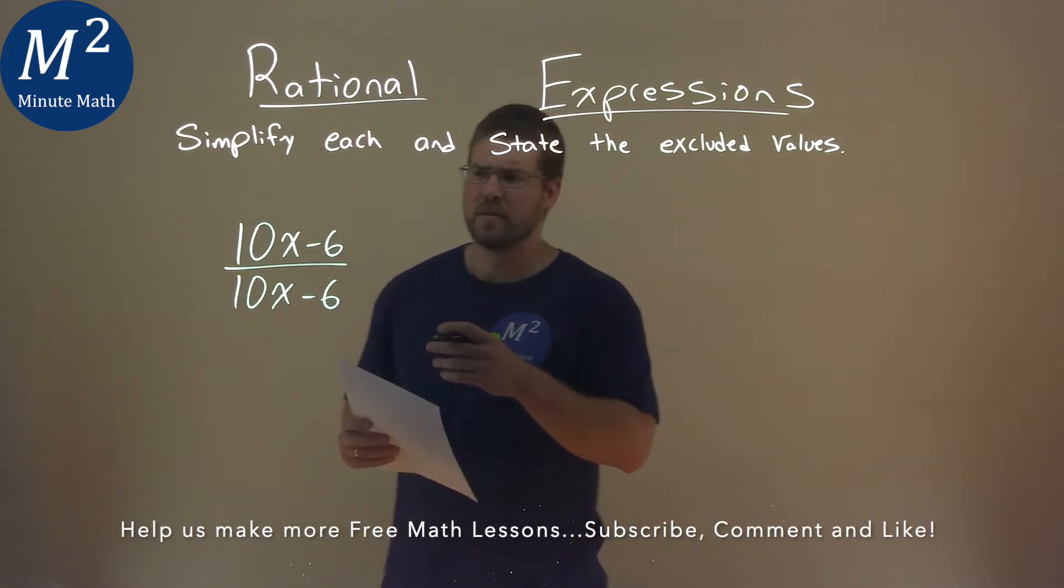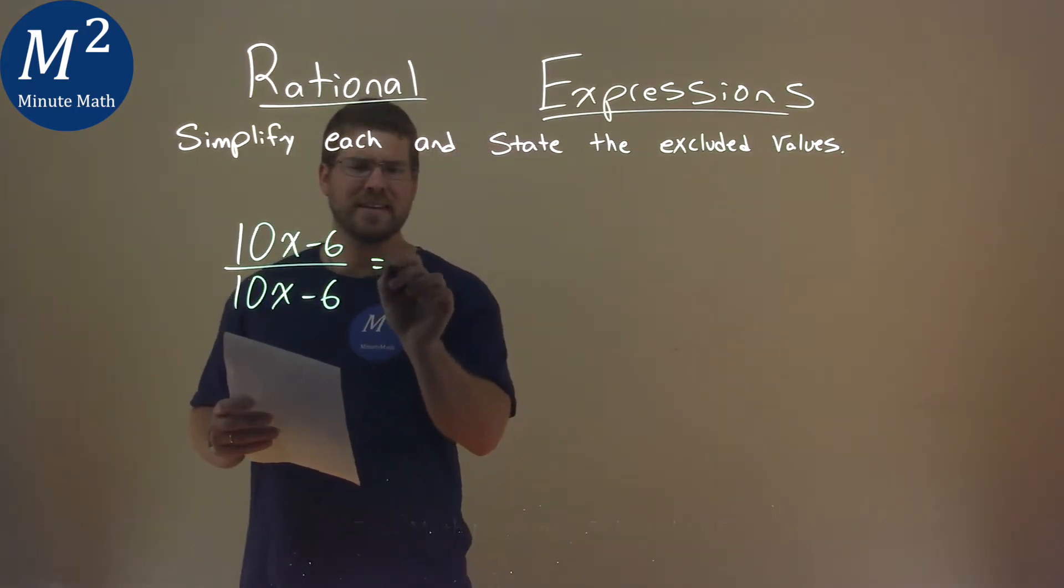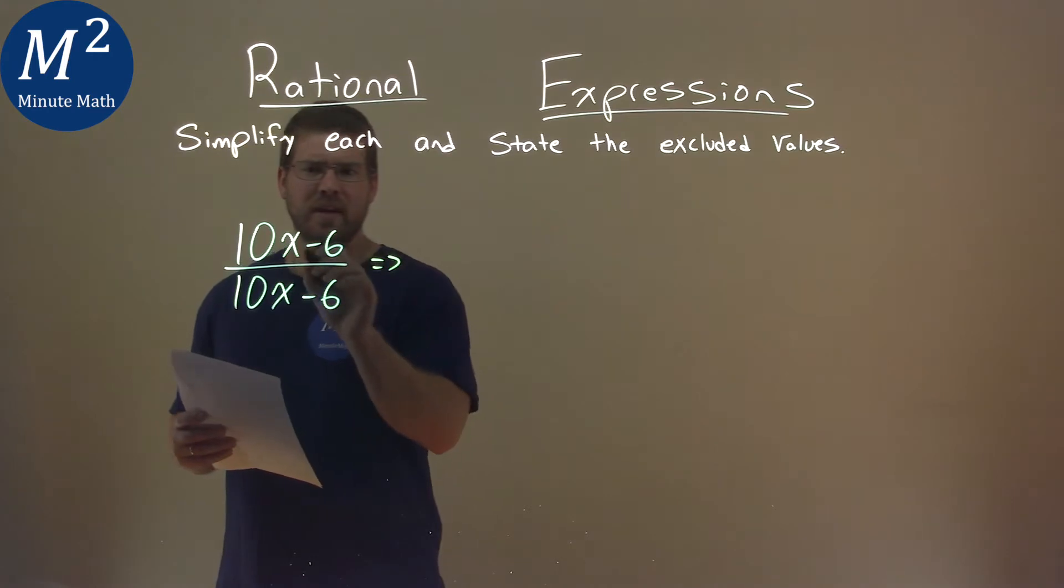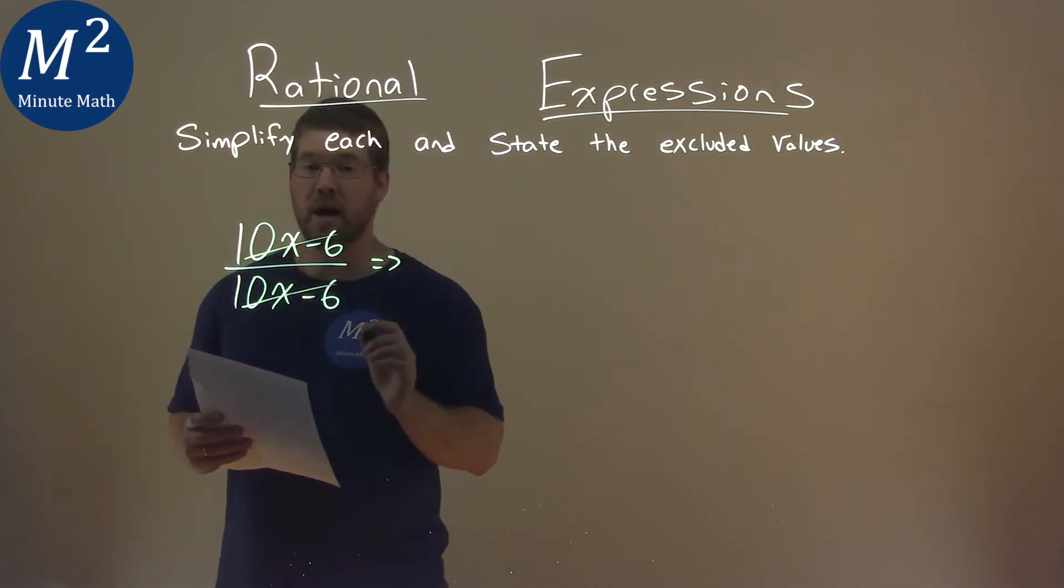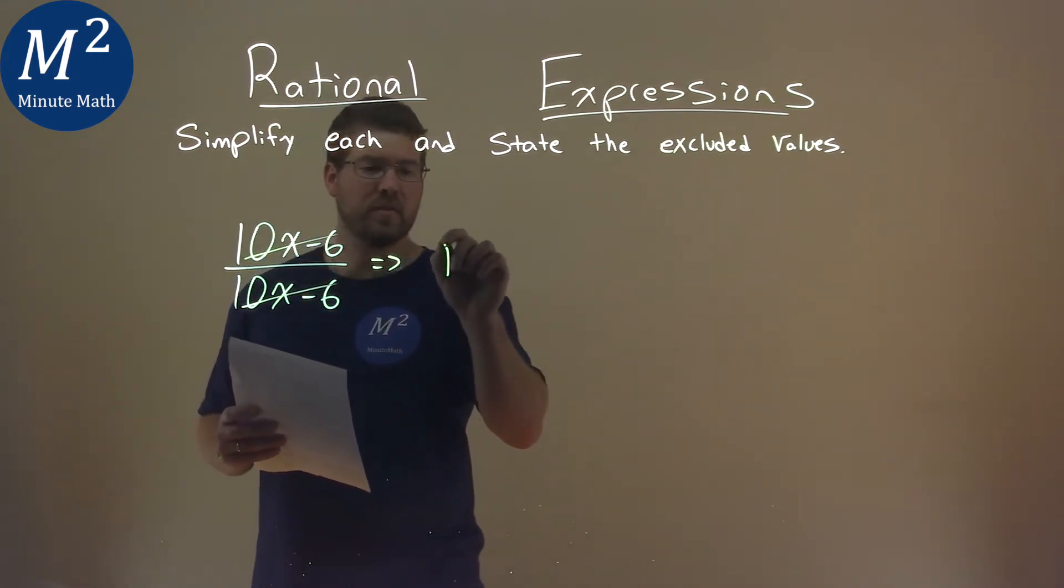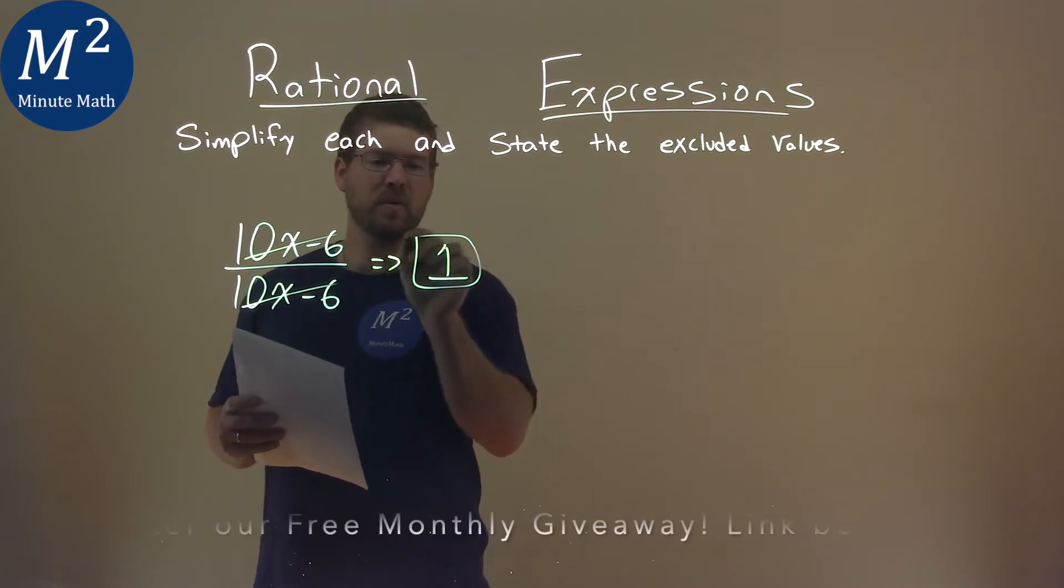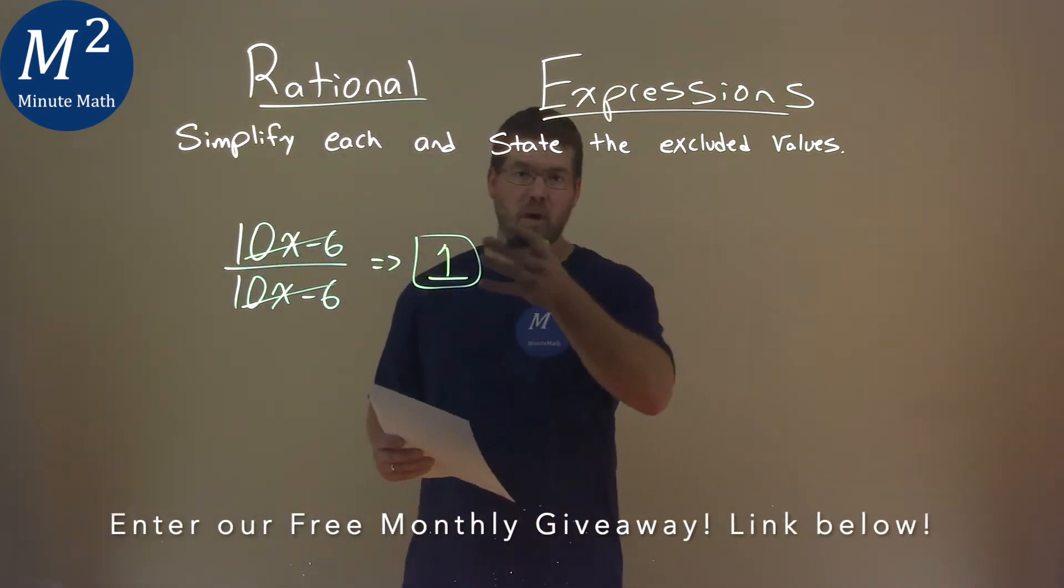Well, 10x minus 6 over 10x minus 6, these are the same things. They essentially can cancel each other out, and we're left with just a 1. So our simplified answer here is just 1, it's pretty easy.